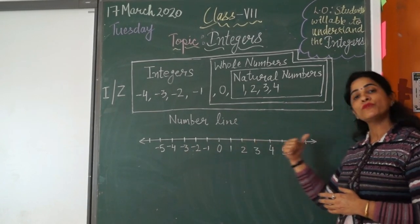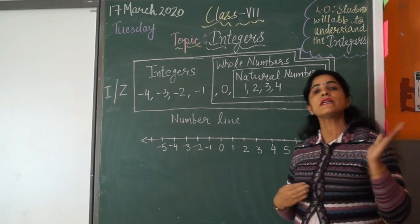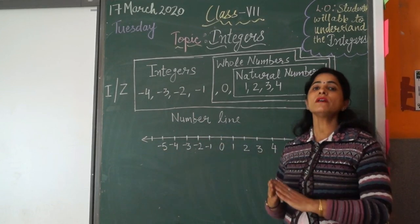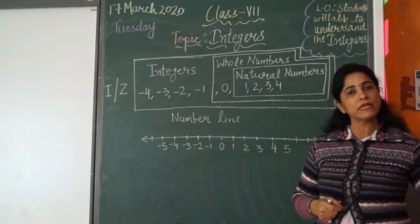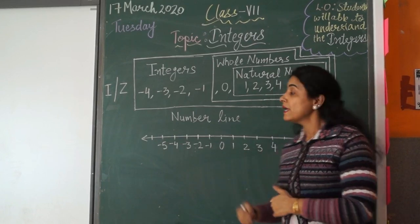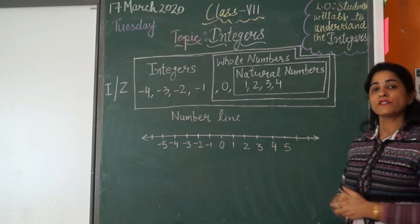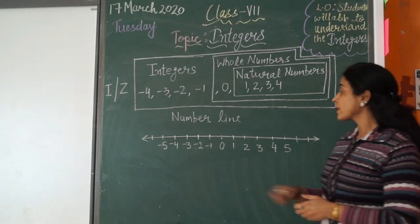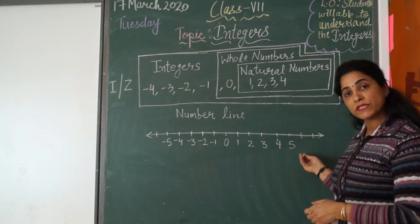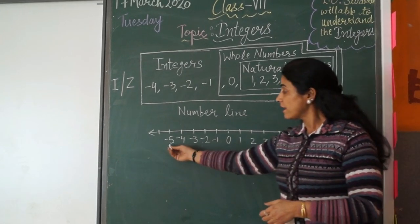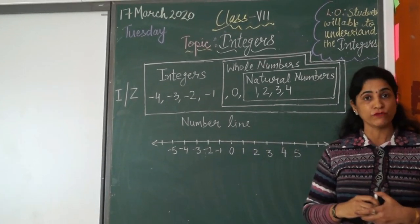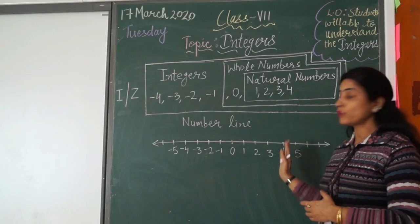When you move from 0 to the right direction, the value of the integer increases. When you move to the left of 0, the value of the integer decreases. So on the number line, moving to the right means the value will increase, and moving to the left means its value is decreasing. All positive numbers are always greater than 0, while all negative numbers are smaller than 0. An integer is greater if it lies to the right of all other integers on the number line.